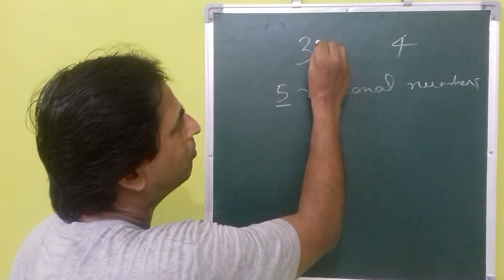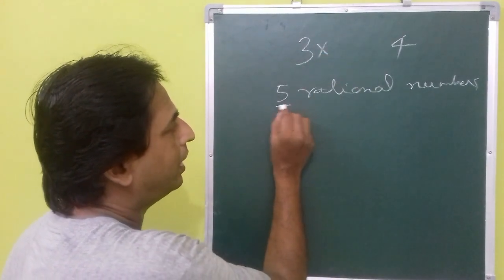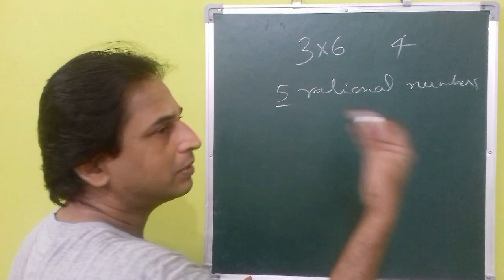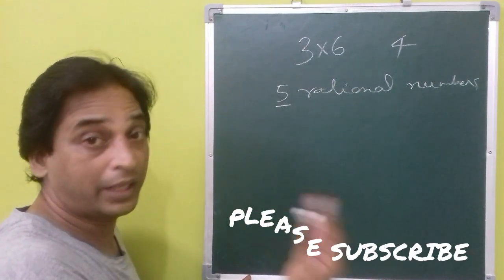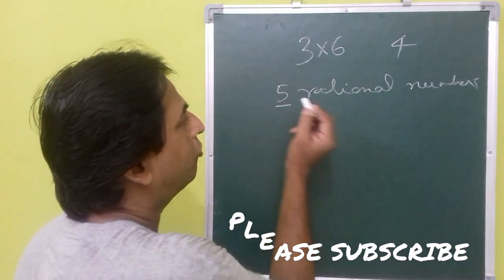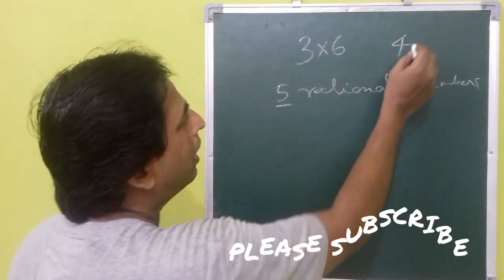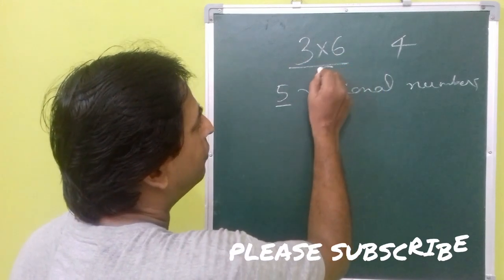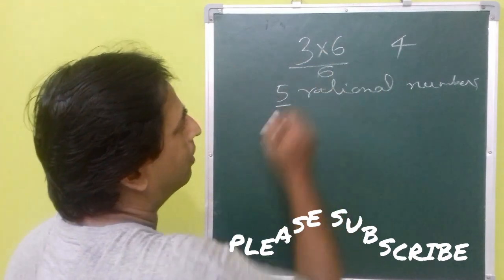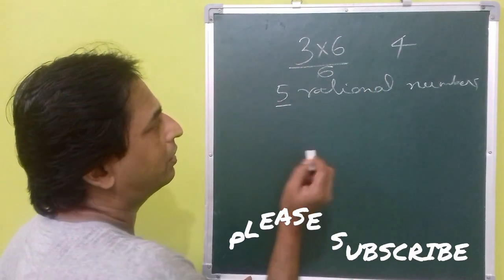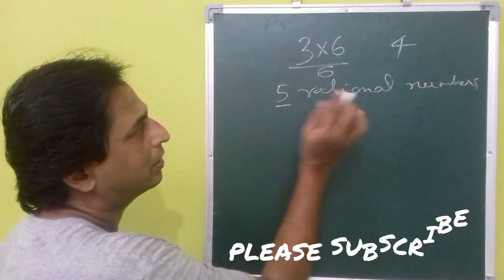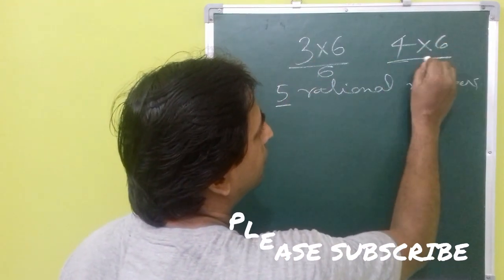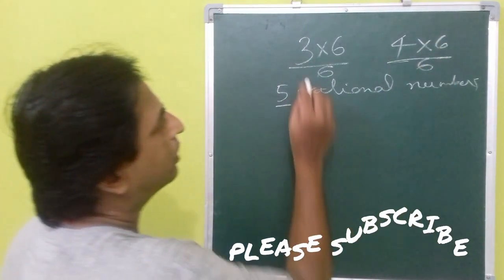As you need five rational numbers, you need to multiply with a number greater than five — it can be six, seven, or ten. You then divide by that same number to balance it, and you need to do this with both numbers.